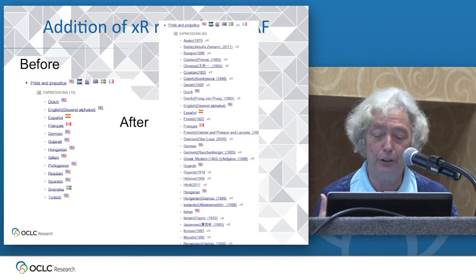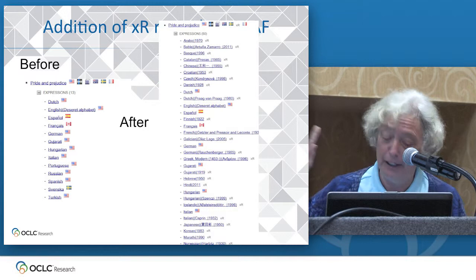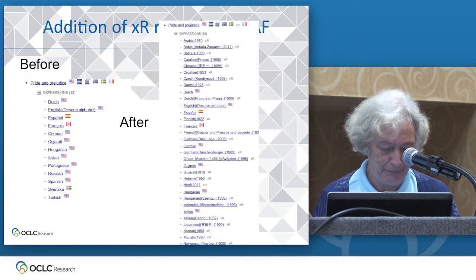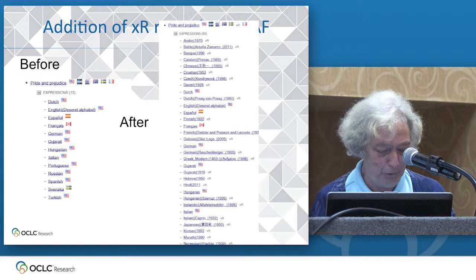Here's a concrete example of the impact of what we're doing. This is Jane Austen's Pride and Prejudice, which originally had 13 translations associated with it. After we generated the XR records for other translations as data mined from WorldCat, the number increased to 50, and the list goes on.